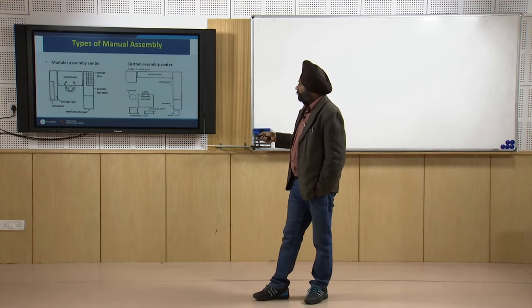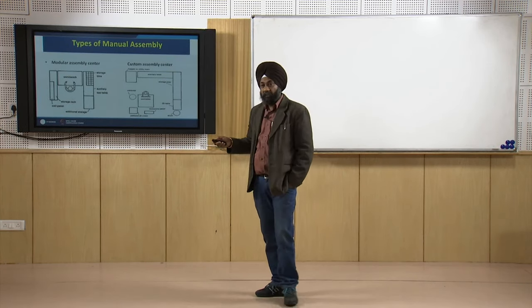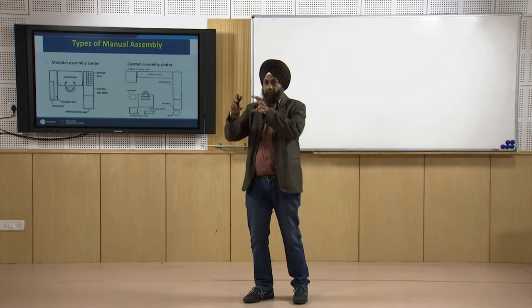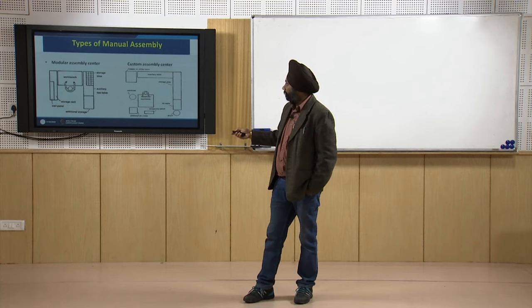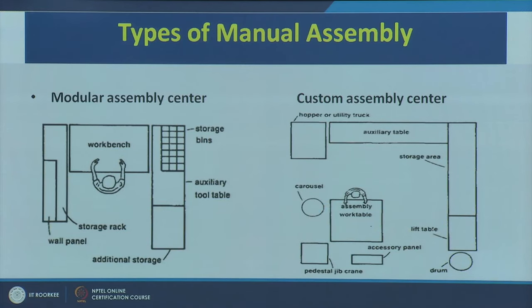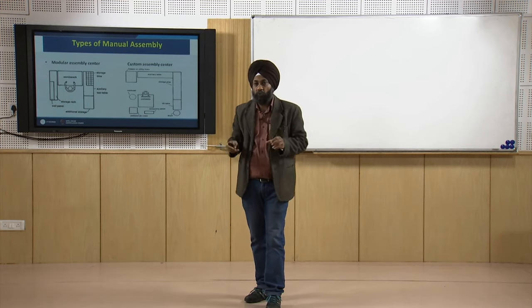The third type is the modular assembly center, which includes a worker, storage rack, storage bins, auxiliary tool table, and additional storage. When the job is slightly bigger in size, a modular assembly center combines different parts or modules. Workers receive different modules from different stations and perform the final assembly on the work bench.